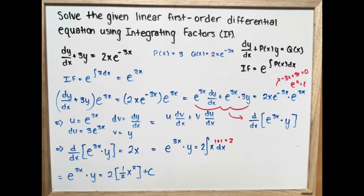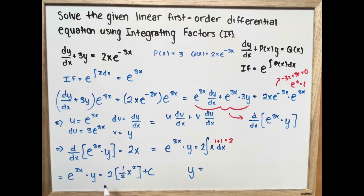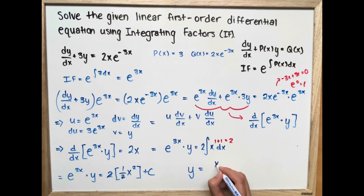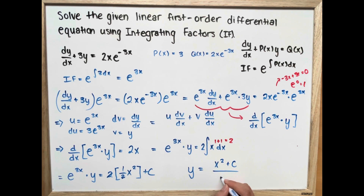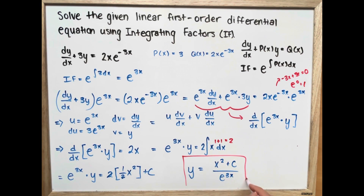Now we rewrite this in terms of y. The 2s cancel out, so y is equal to x squared plus C, all divided by e to the power of 3x. That is our final answer.